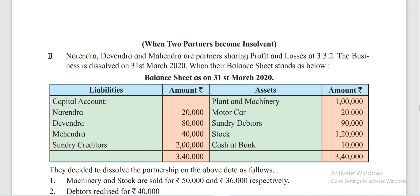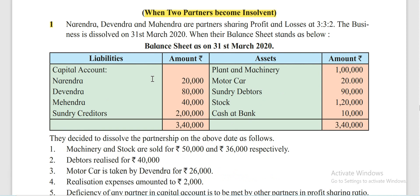Here we are going to discuss problem number 1. This is the solved problem of when two partners become insolvent. Narendra, Devendra, and Mahendra are partners sharing profit and losses at 3:3:2. The business is dissolved on 31st March 2020 when their balance sheet stands as below.